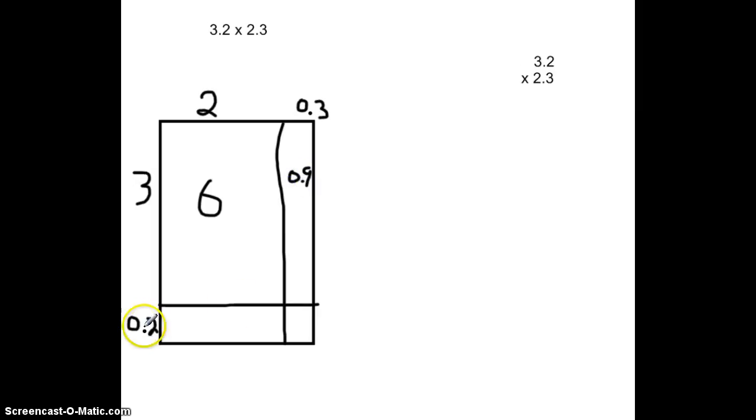Likewise, 0.2, two groups of 0.2 is 0.4, which makes sense. And then finally, 0.3 times 0.2, we have to say, we have to look at that as...